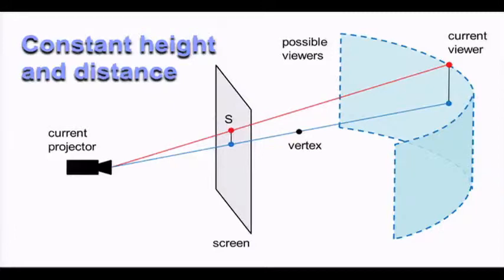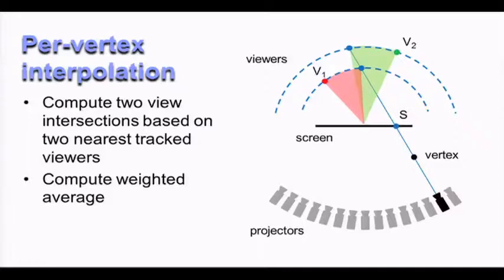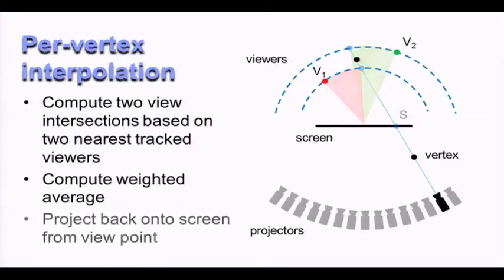Now, if we have multiple viewers at different heights, we can take the nearest two viewers to a particular ray, and represent them as two different circles at different heights and distances. We take the same ray and intersect it with both circles, so we get two intersection points. Now neither of the tracked viewers will necessarily lie on this ray, so we have to interpolate between the two nearest viewers. And we do this by looking at the angle between the intersection point and the tracked viewer positions. And then we compute a weighted average based on these two angles. And then once we have that average point, we can then re-project back onto the screen as before.